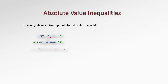Remember, absolute value of a certain expression really tells us how far this expression is positioned from zero — what is the distance of this expression from zero? This distance is supposed to be less than k steps. If you imagine a number line, the expression can move up to k steps forward or backwards. That's not x, but the full expression that goes k steps apart from zero. Our role is to find the values for x that will make the expression live in the interval from negative k to k.